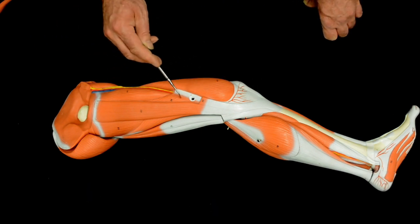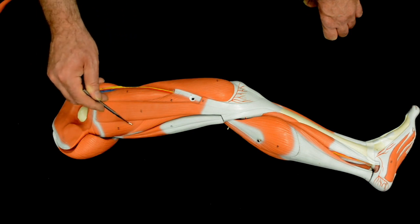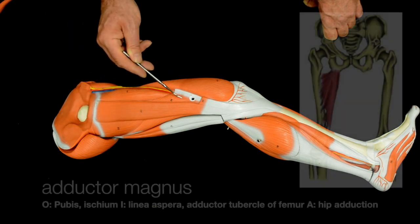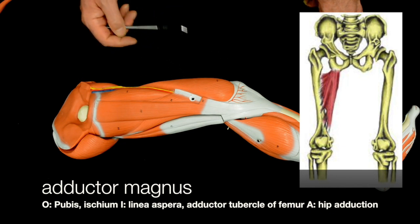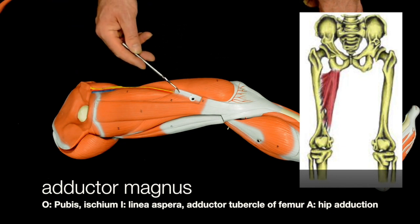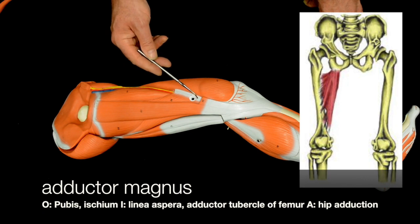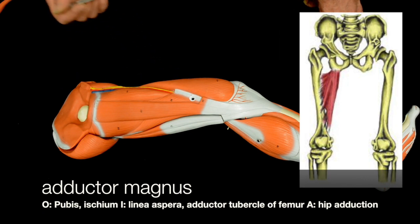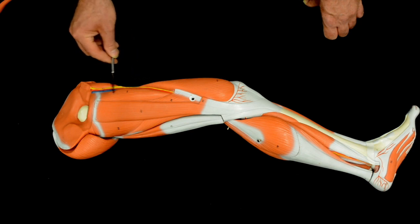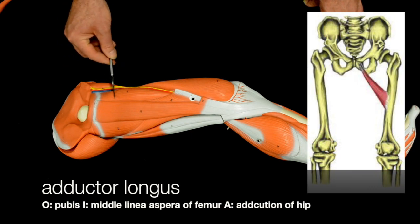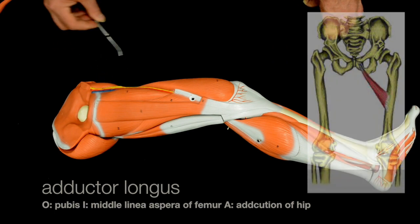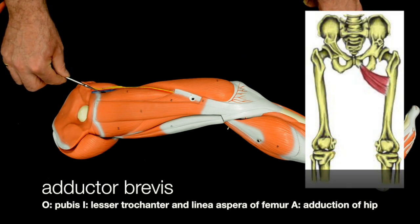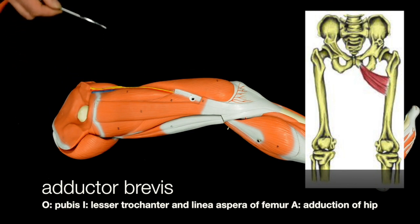Then we have our adductor muscles. This muscle here is the adductor magnus, and this inserts on the posterior femur at the linea aspera, and also on the adductor tubercle on the medial epicondyle. Then we have this muscle, which inserts halfway down the femur on the linea aspera — this is the adductor longus. Then above and deep to the adductor longus, we have the adductor brevis.